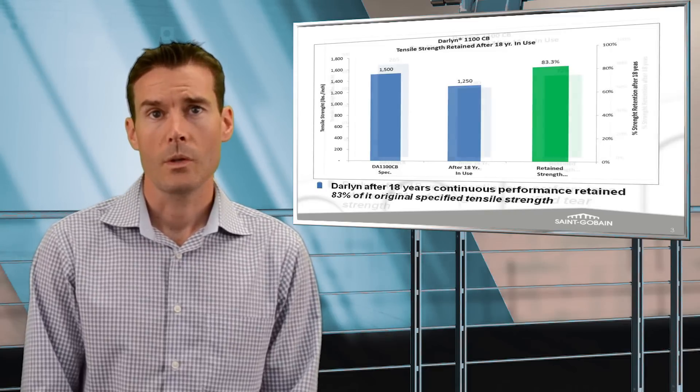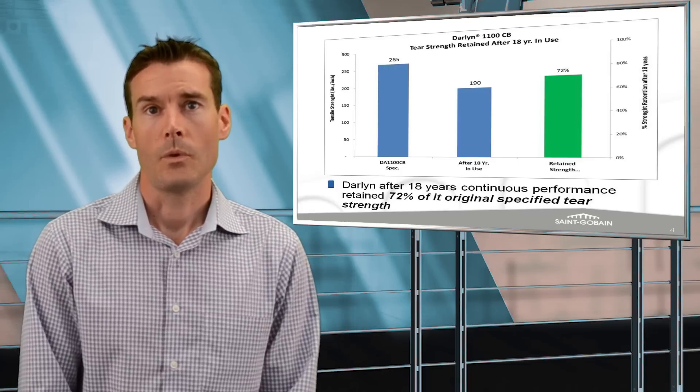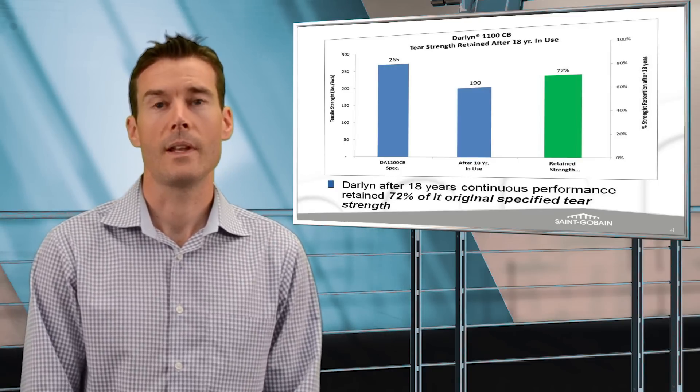The trapezoidal tear strength was 72% of the strength as produced, which represents nearly four times the trapezoidal tear strength performance level that is required.